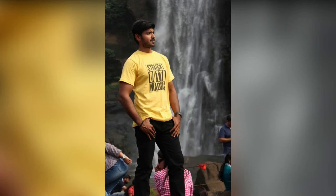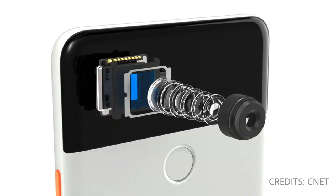How do you look at the portrait mode? The camera focuses on the primary object and the background is blurred.